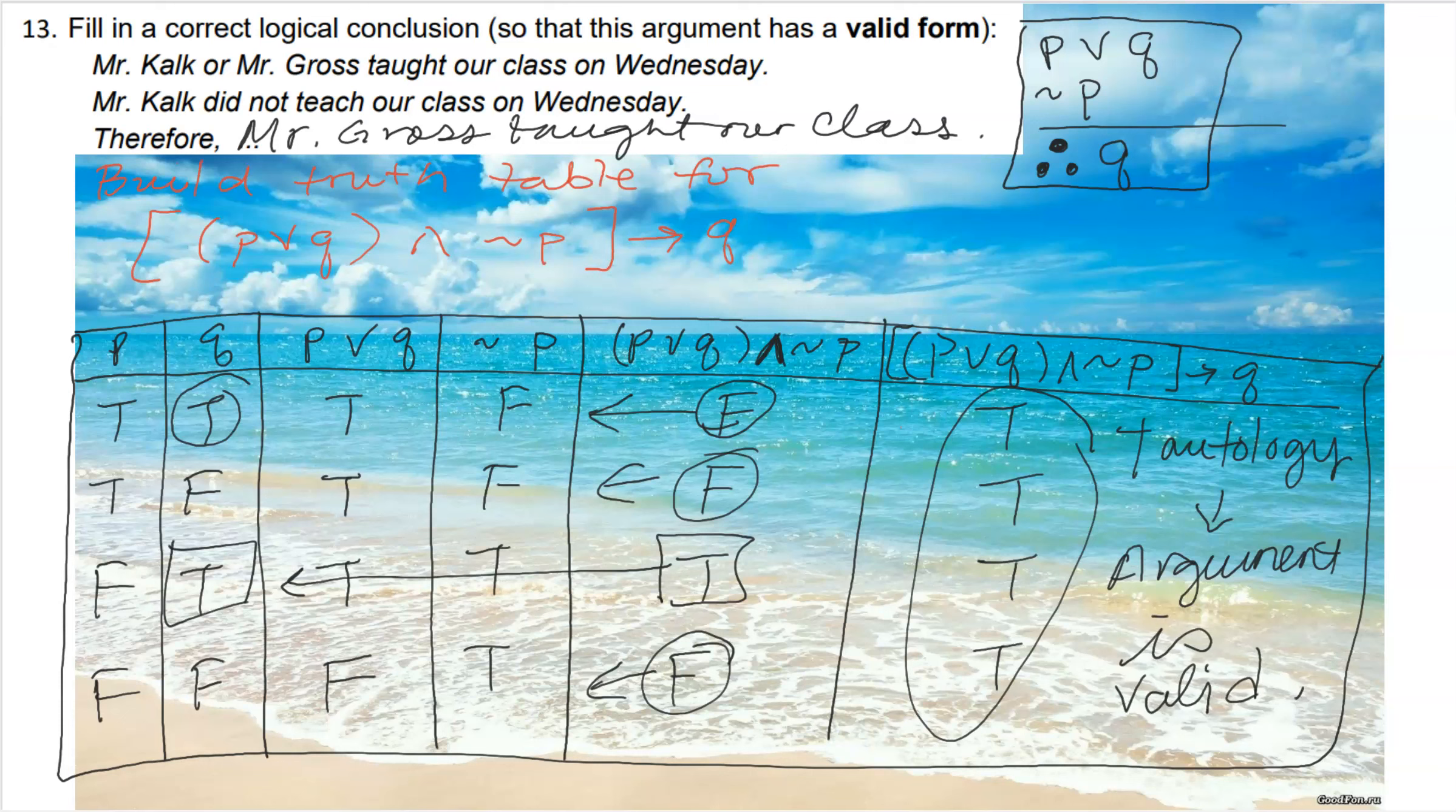Therefore the argument is valid and we have a valid logical conclusion. So that is how we show that we did conclude the argument logically, meaning we did have a valid argument with that conclusion. And that is number 13.